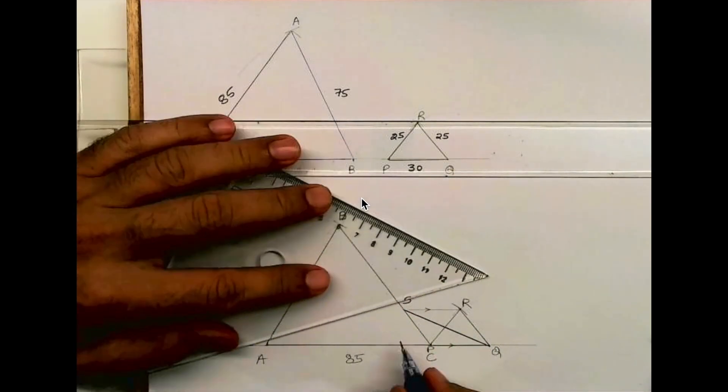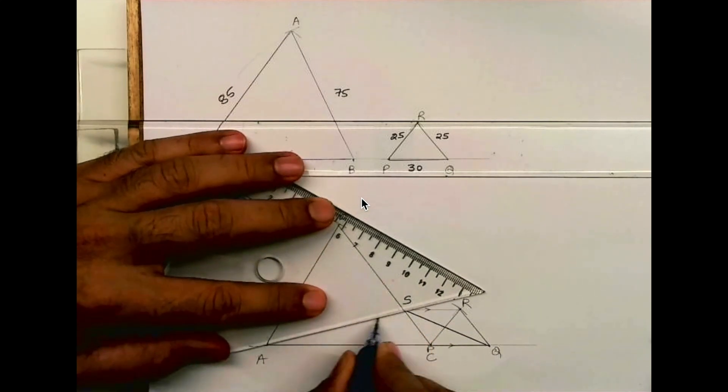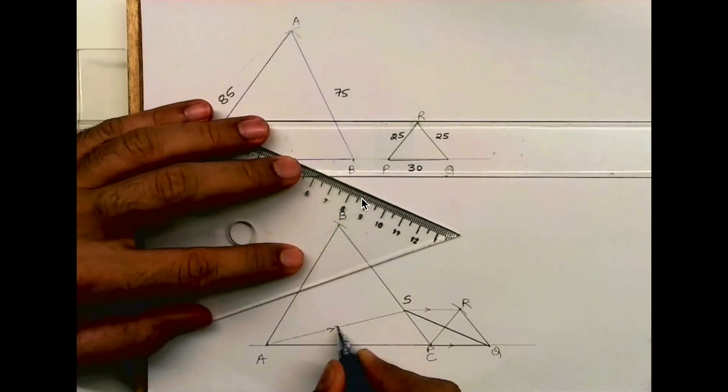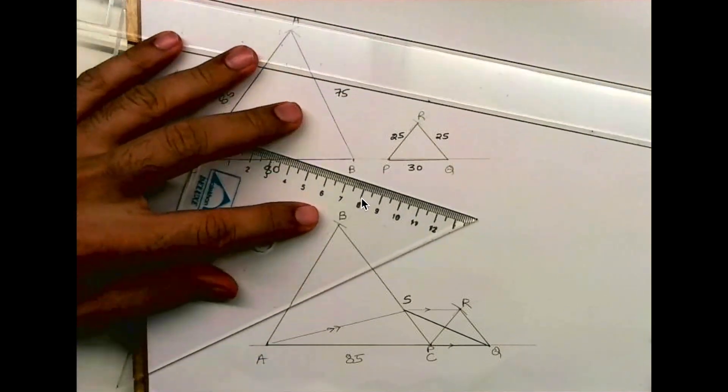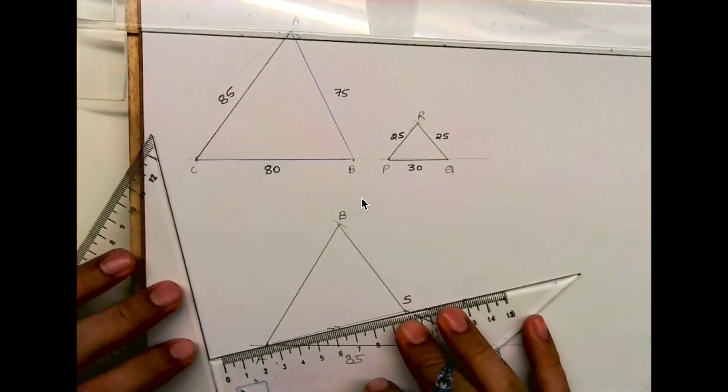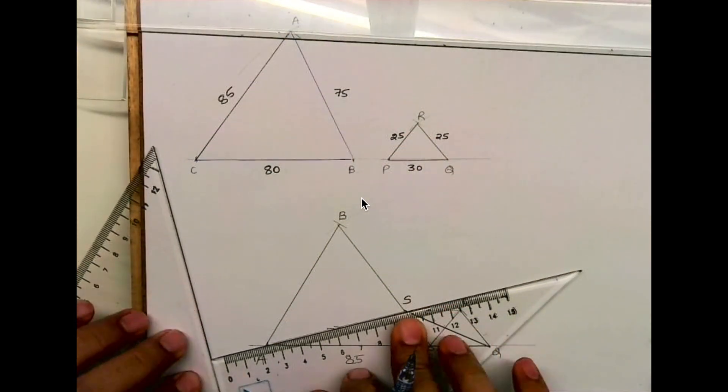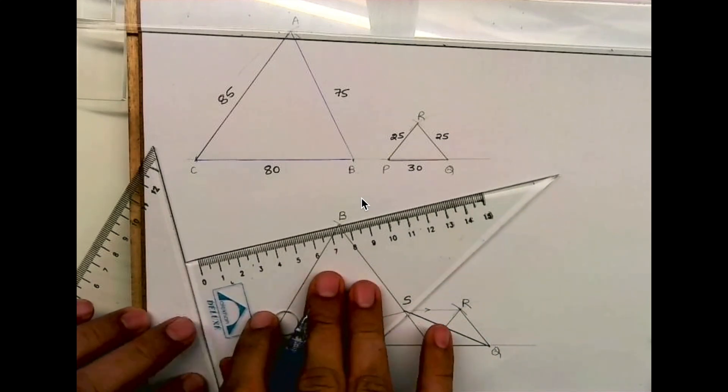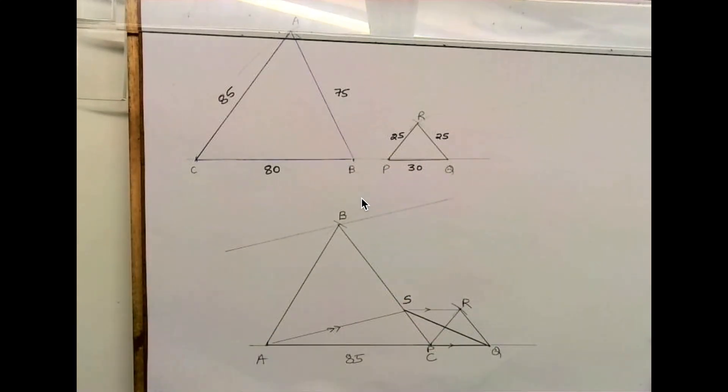According to the equal area theorem of same base and same height, I'll do the same thing here. I will join A to S and draw a parallel line passing through B.